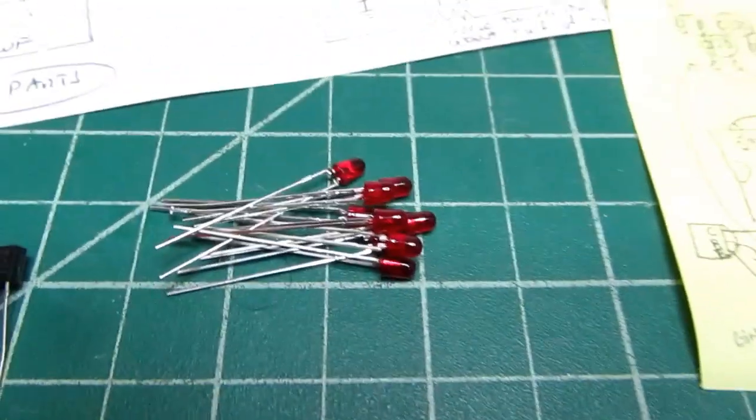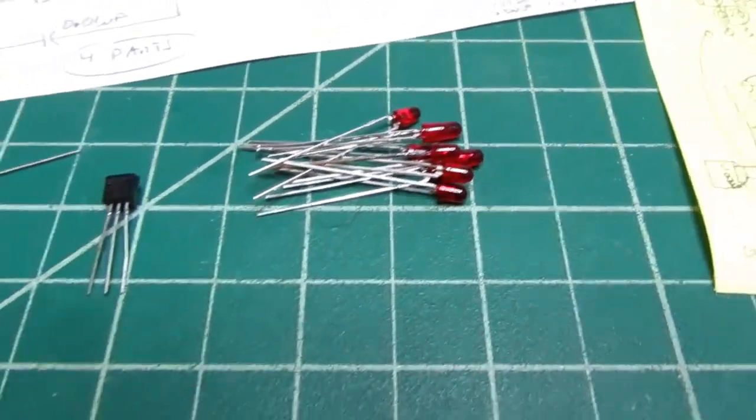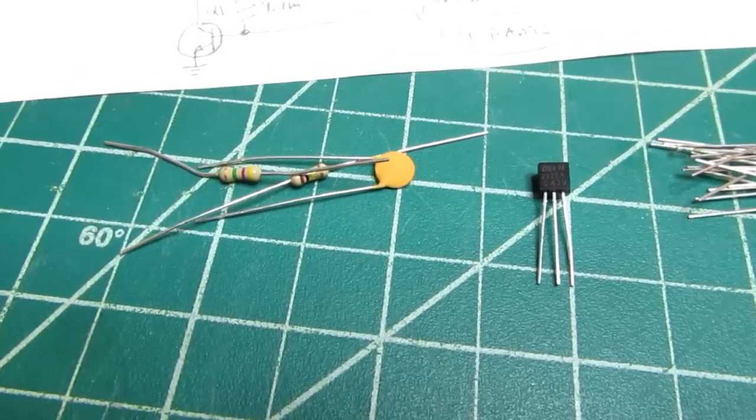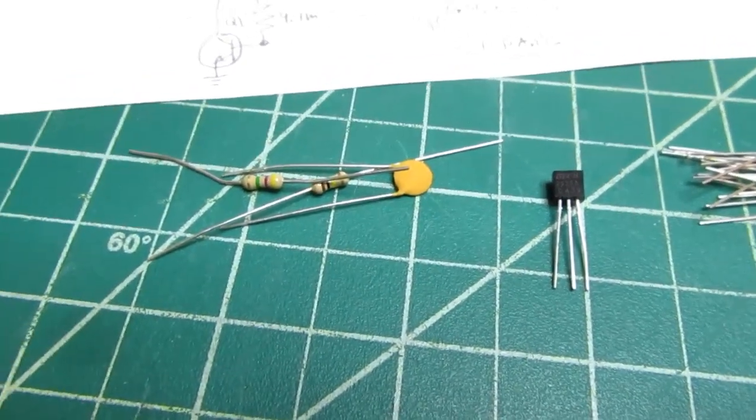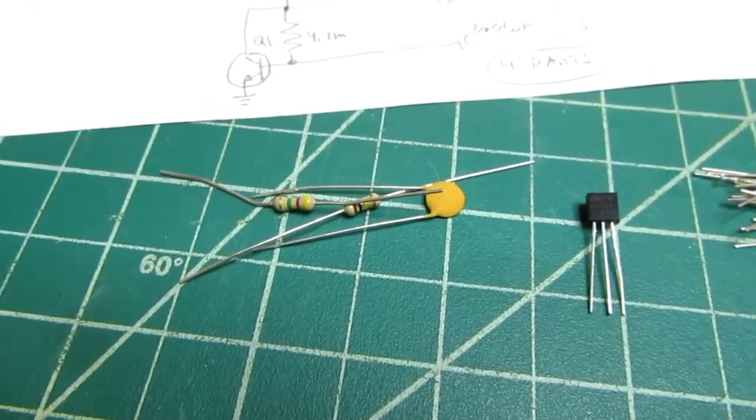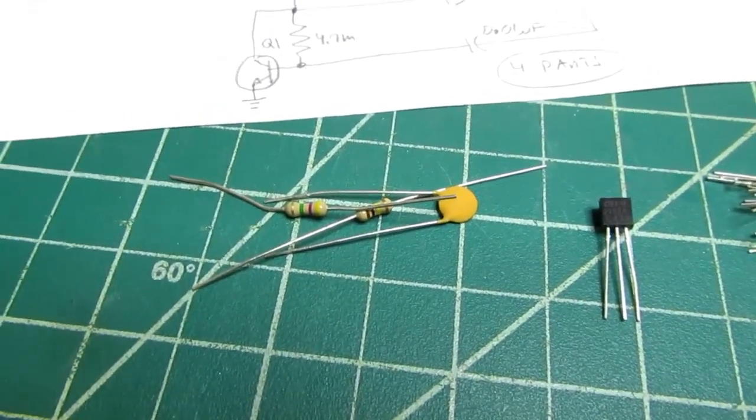I've got nine LEDs, a NPN bipolar transistor - this is just a 2N2222, pretty much any general purpose NPN would work - and then I have two resistors and a capacitor.